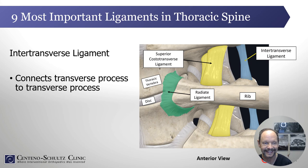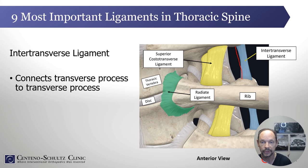The next one is the intertransverse ligament, and as the name implies it basically connects the transverse processes between levels in the thoracic spine — it just connects the transverse process between the two.